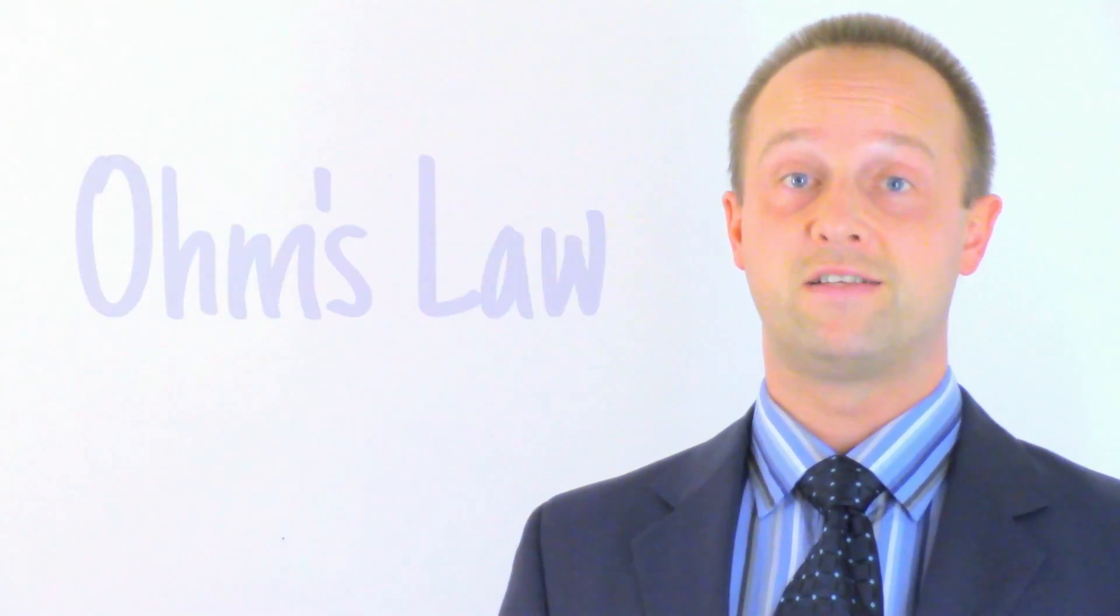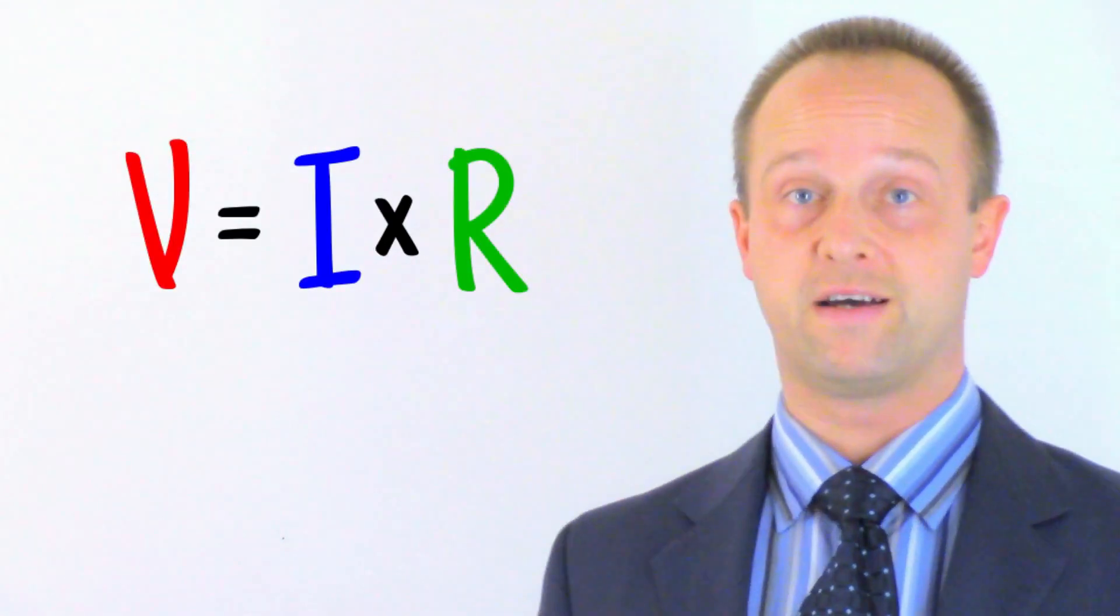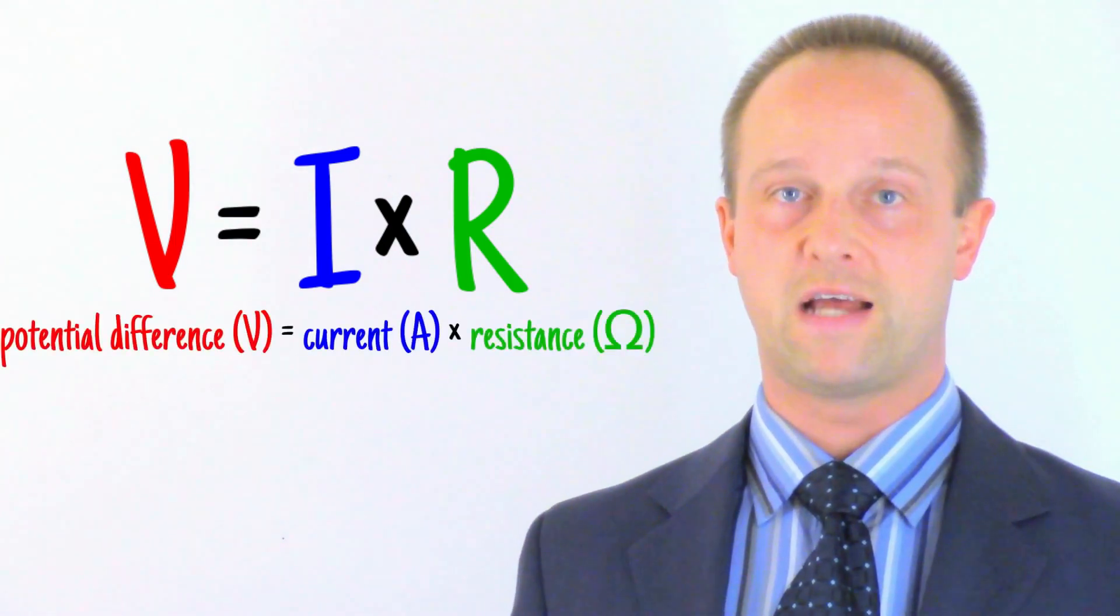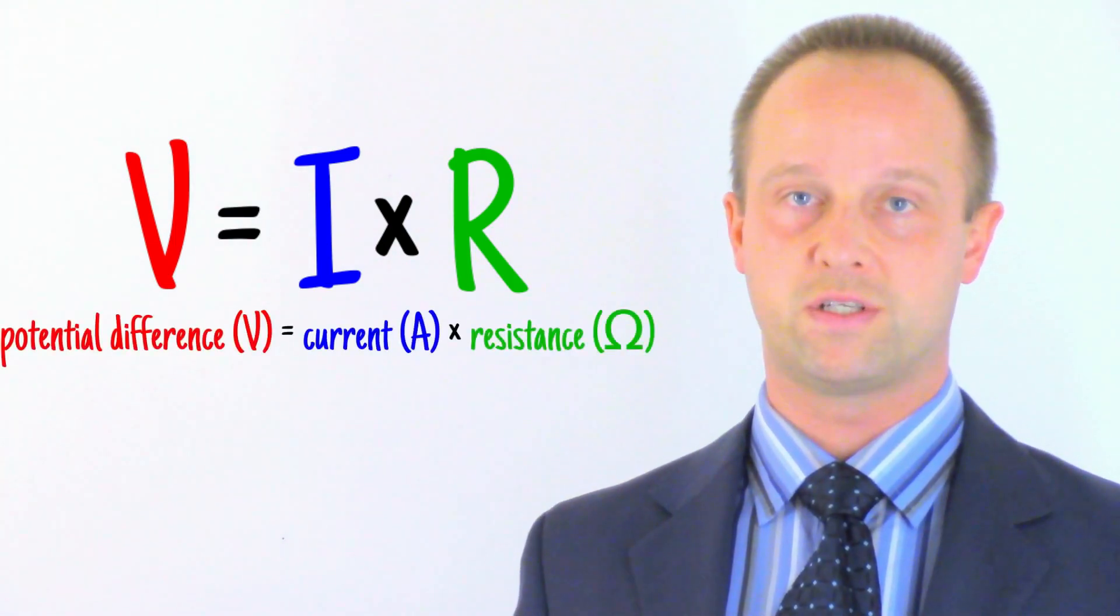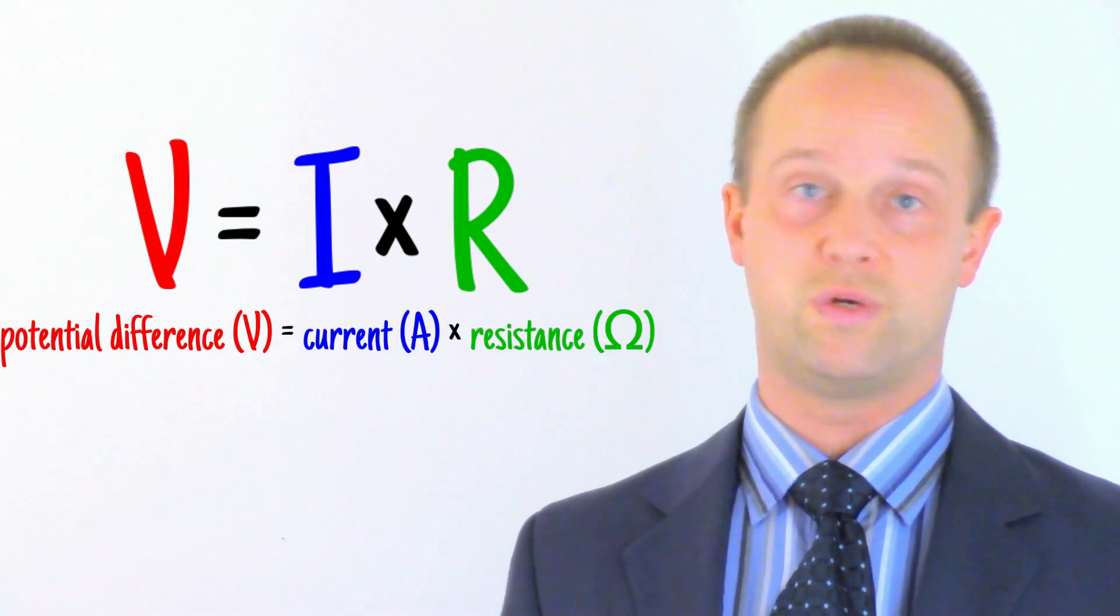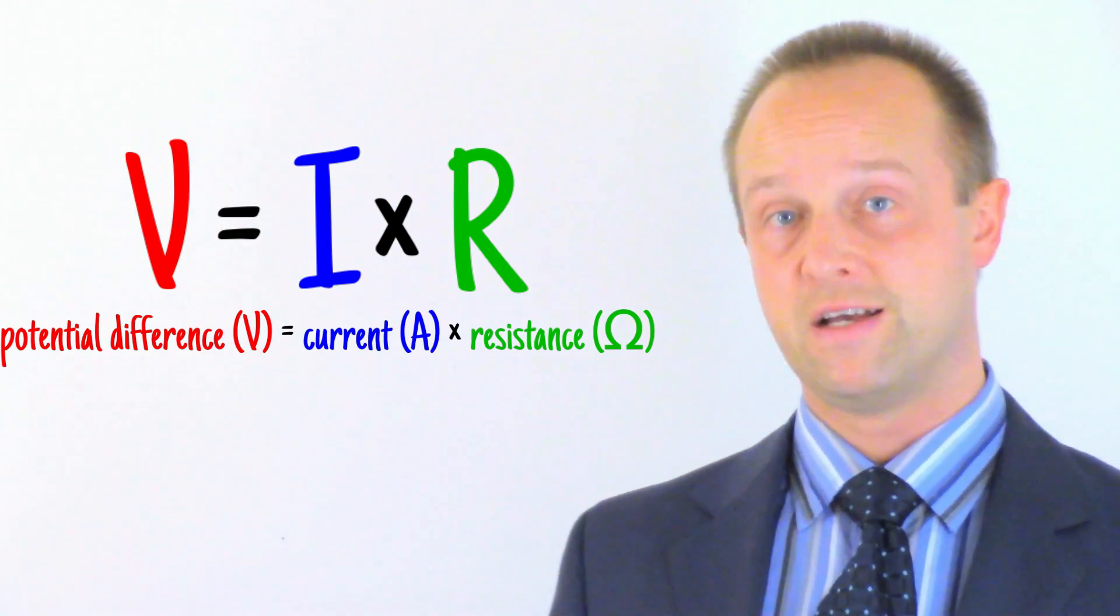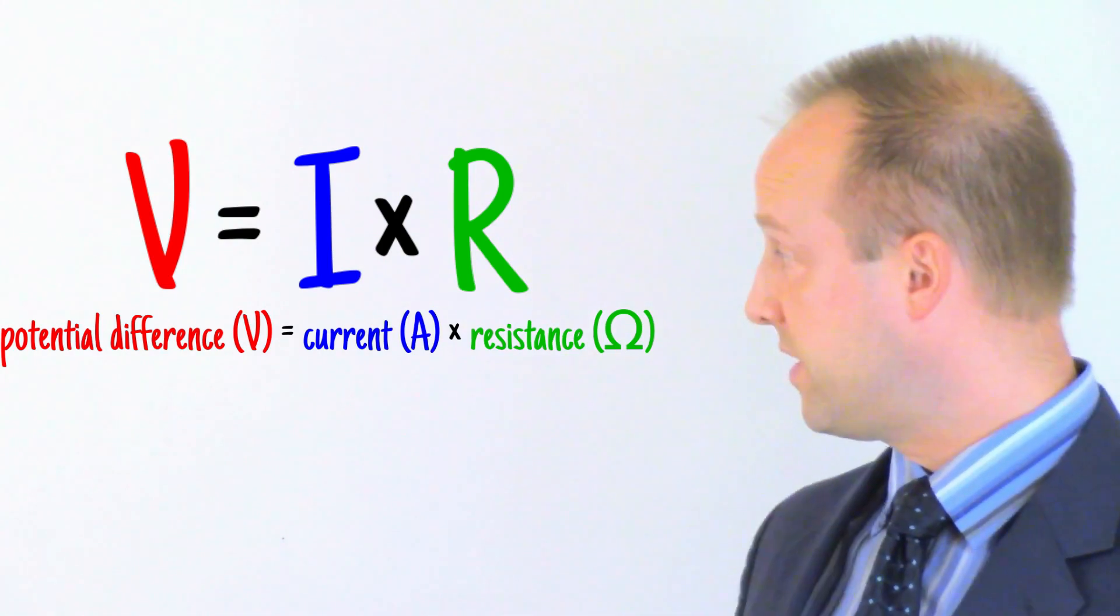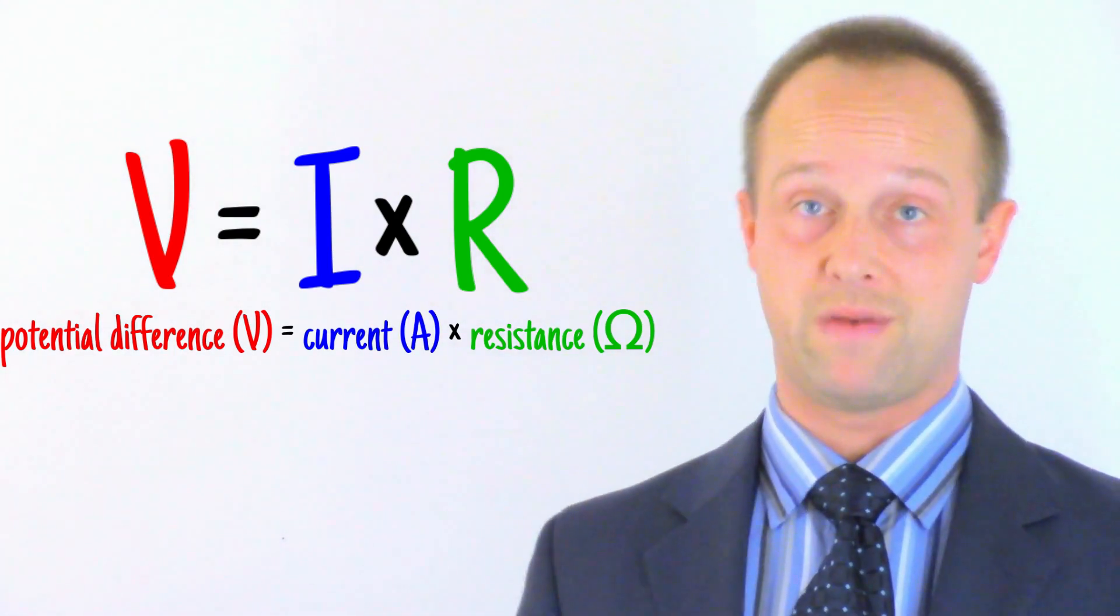One of the most important equations for describing circuit behaviour is Ohm's Law, which is usually stated as V equals I times R, or just V equals IR. V, the potential difference across a component in volts, is equal to I, the current through the component in amperes, which we usually just shorten to amps, multiplied by R, the resistance of that component in Ohms, for which we use the Greek symbol Omega.